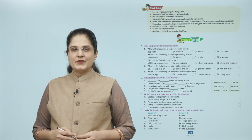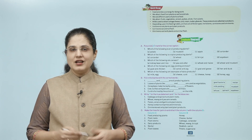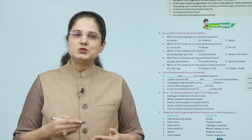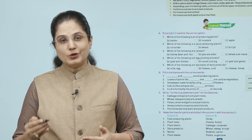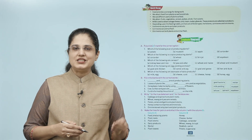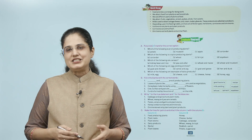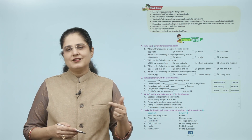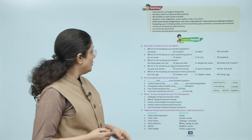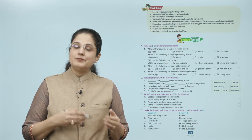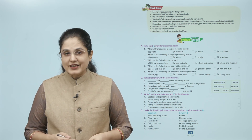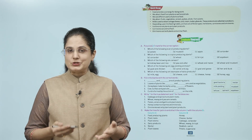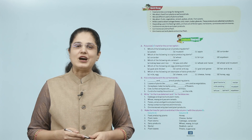Quick recap: Food provides us energy for doing work. We obtain food from plants as well as animals. We eat different parts of plants — fruits, vegetables, cereals, pulses, oil, etc. Milk is used to obtain cottage cheese, curd, cream, butter, ghee, etc. — these are called dairy products. Depending upon feeding habits, animals are of three types: herbivores, carnivores, and omnivores. Herbivores eat plants; carnivores eat animal flesh; omnivores eat both. I hope this chapter is clear to all.